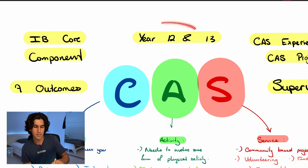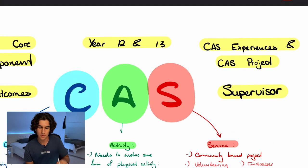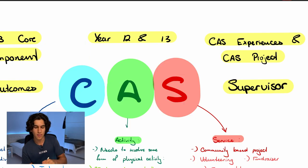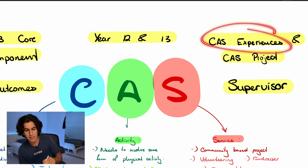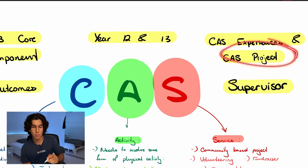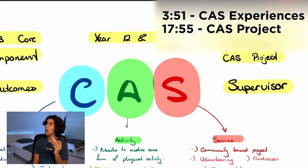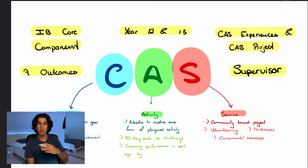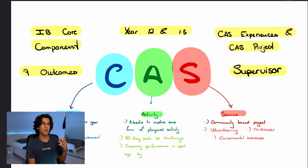CAS happens in years 12 and 13 — your final two years of high school. There are a couple of main elements within CAS: CAS experiences and a CAS project. Look up on screen — there should be timestamps to where we talk about CAS experiences and the CAS project.